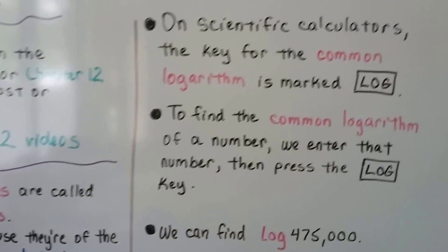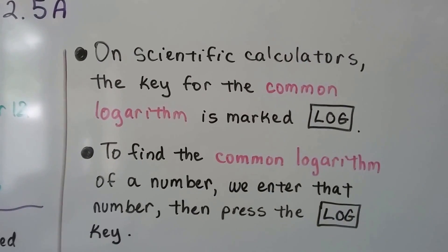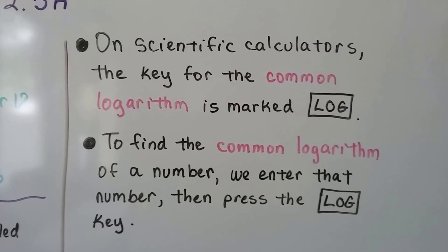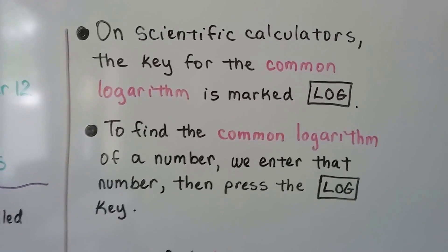On scientific calculators, on some scientific calculators I should say, the key for the common logarithm is marked log. That's the button. To find the common logarithm of a number, we enter that number and then hit the log key. It's really easy.